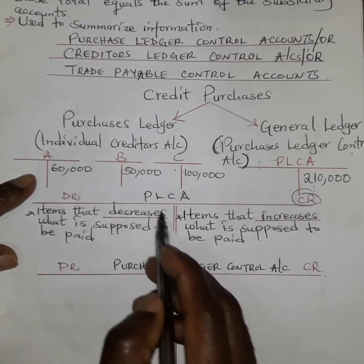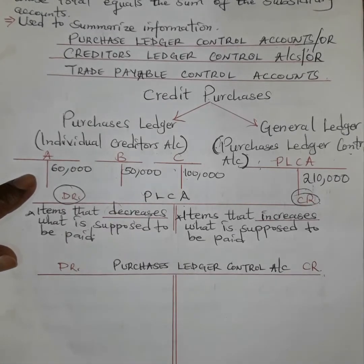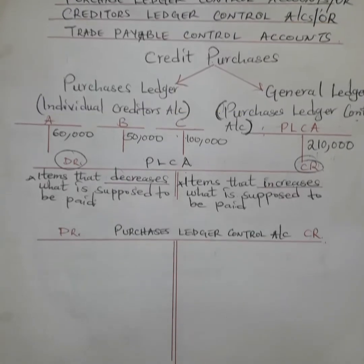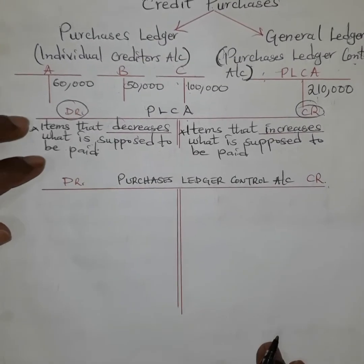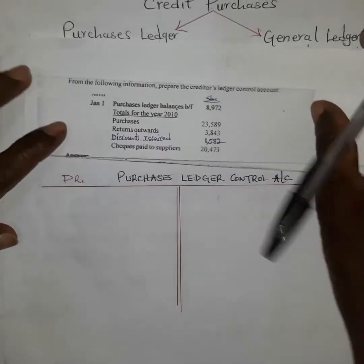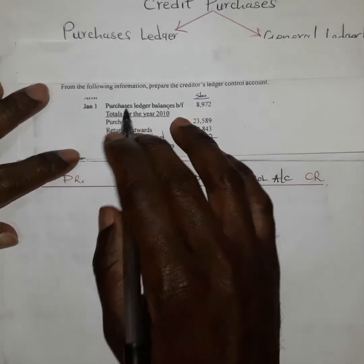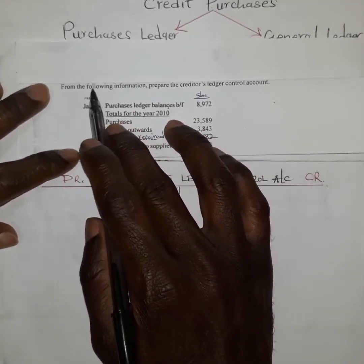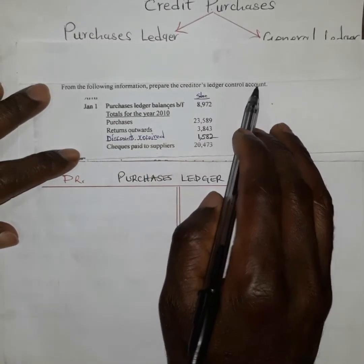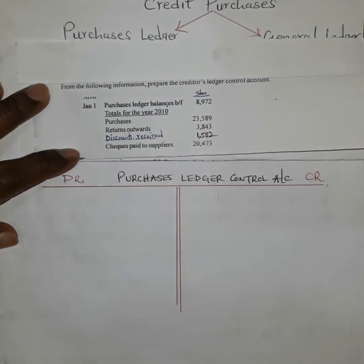Now this is the hint that will guide us: items that increase what is supposed to be paid are credited, following the double entry principle for liabilities. Let us now look at the example and prepare the creditors ledger control account, which is simply the purchases ledger control account.